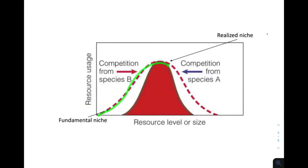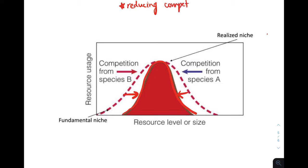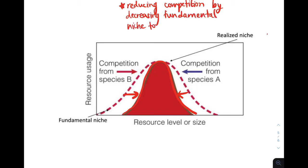Another graph shows that the fundamental niche is represented by a dotted line, but because of competition from other species, the fundamental niche is reduced to the realized niche. The actual range of resources used is smaller than the potential range the species can occupy. The key point is that species reduce competition by narrowing their fundamental niche to their realized niche, because the area of niche overlap has limited resources, and by reducing competition the species increase their chances of survival.